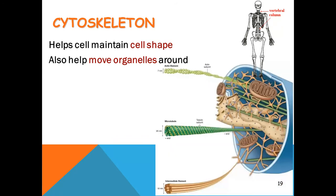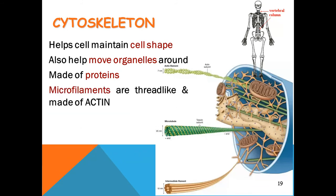The cytoskeleton is made up of proteins. Microfilaments are thread-like and made up of a substance called actin. Microtubules are tube-like and made up of tubulin.